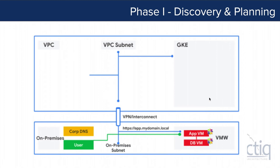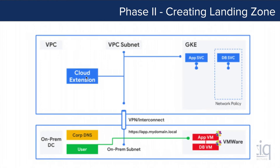Let's have a look at phase 1 — discovery and planning. In this example, we've got two virtual machines running in our VMware environment based on CentOS 7. The application is a Python Flask application and the database is MySQL. Users are leveraging corporate DNS and connecting over a URL. We've got a VPC configured into our GKE environment with subnets in our GCP project, and our GKE cluster is deployed leveraging the same VPC. The next thing we have to do is create the landing zone to get things configured.